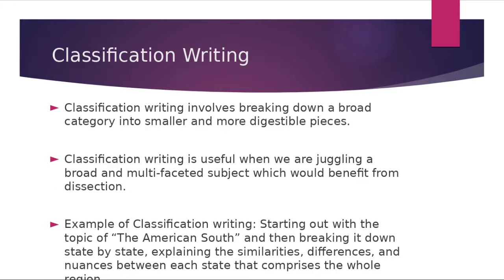Classification writing — sometimes called classification and division — involves breaking down a broad category into smaller and more digestible pieces. It's useful when juggling a broad, multifaceted subject that benefits from dissection. For example, starting with the American South and breaking it down state by state, explaining similarities, differences, and nuances between each state. Another example: a classification essay on bears, where each paragraph covers a specific type of bear.